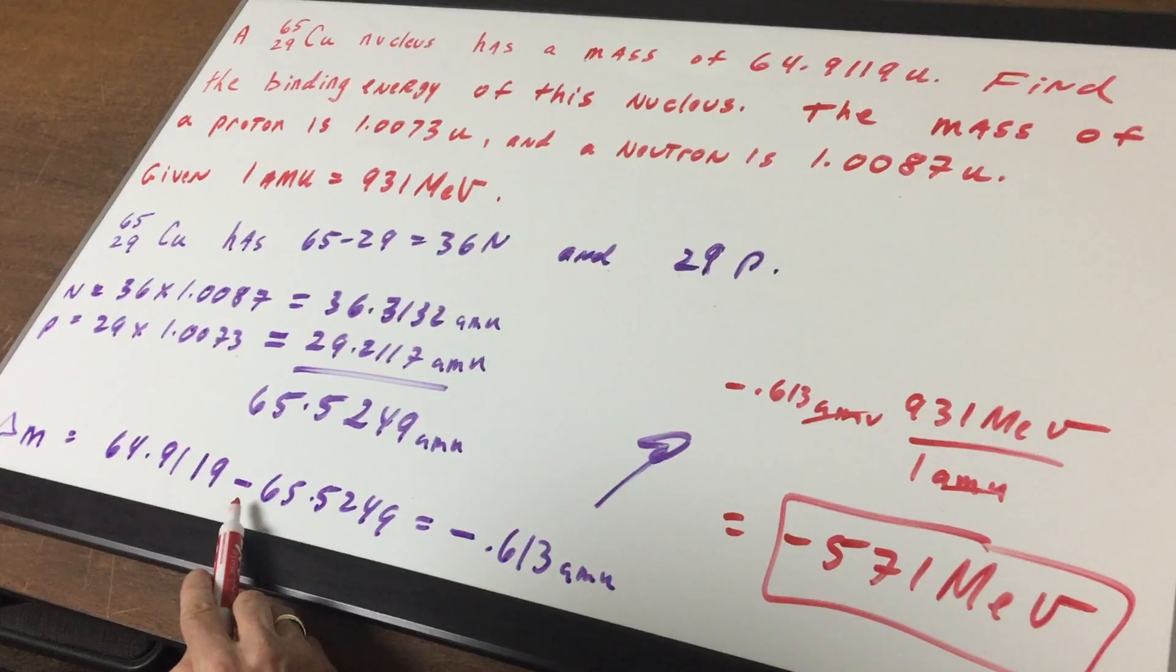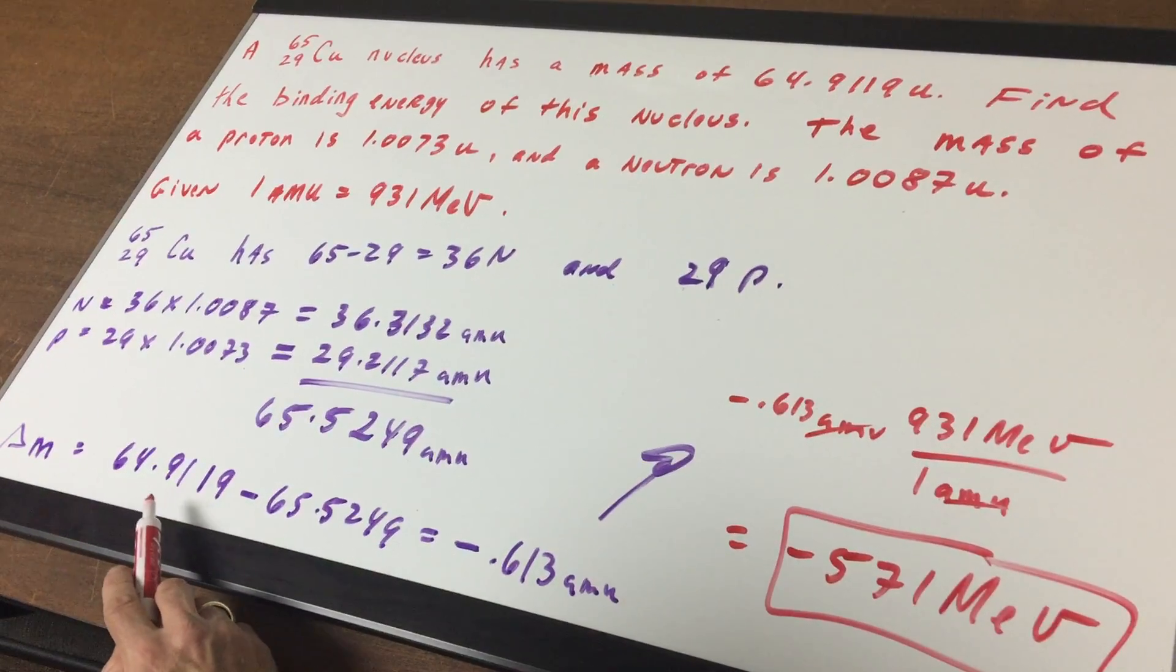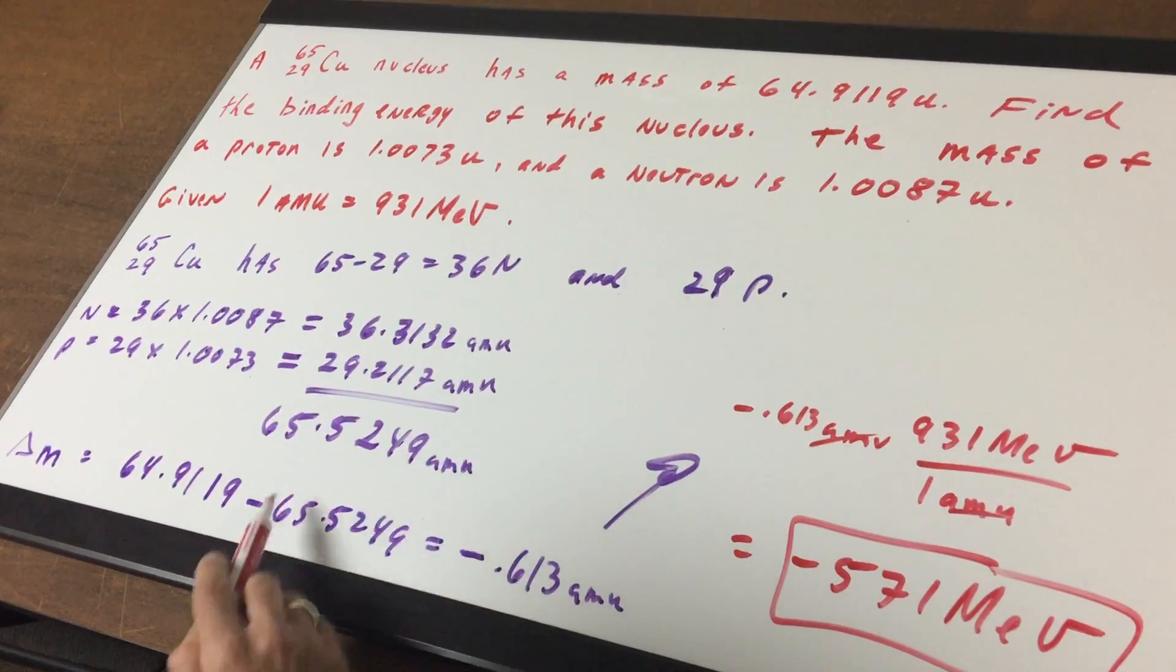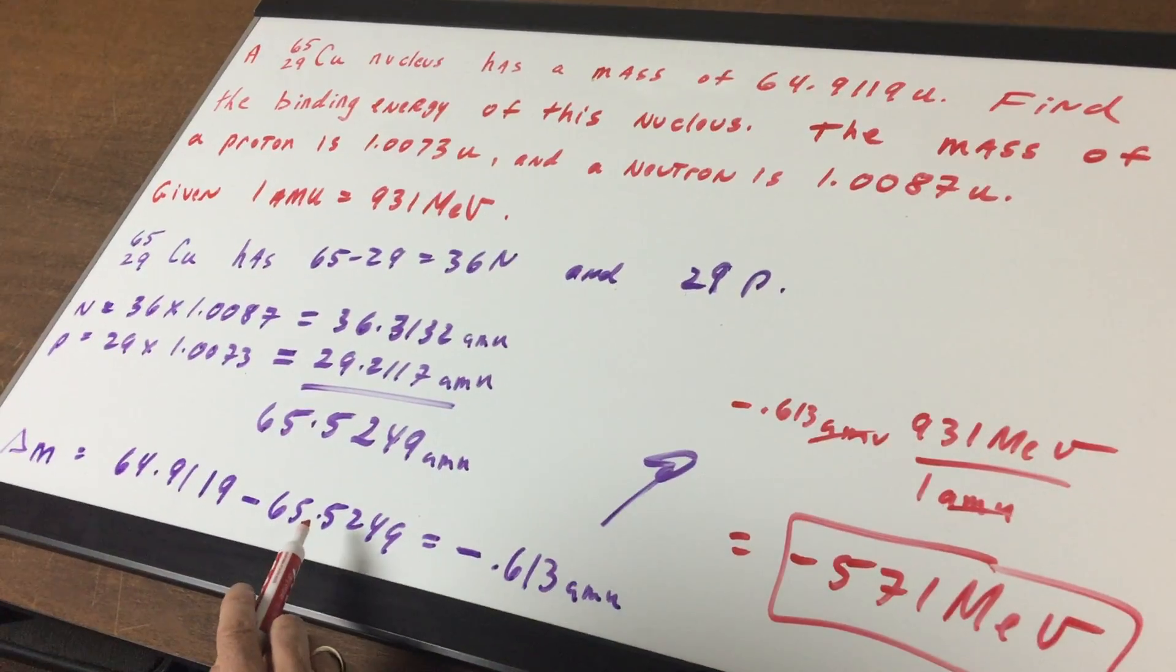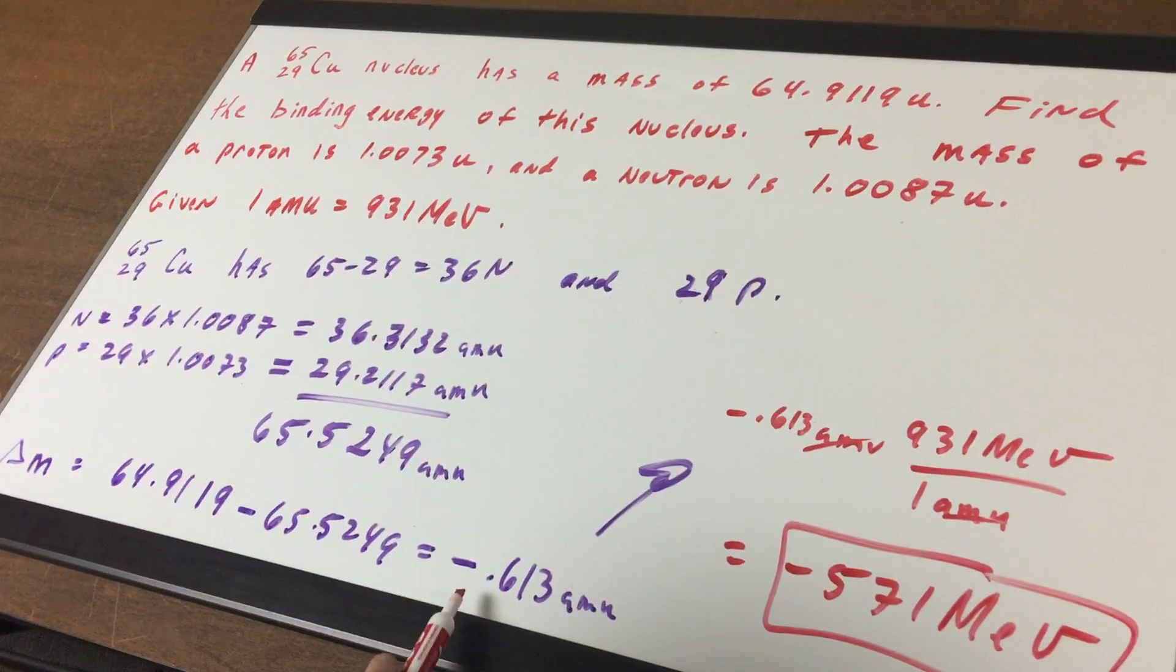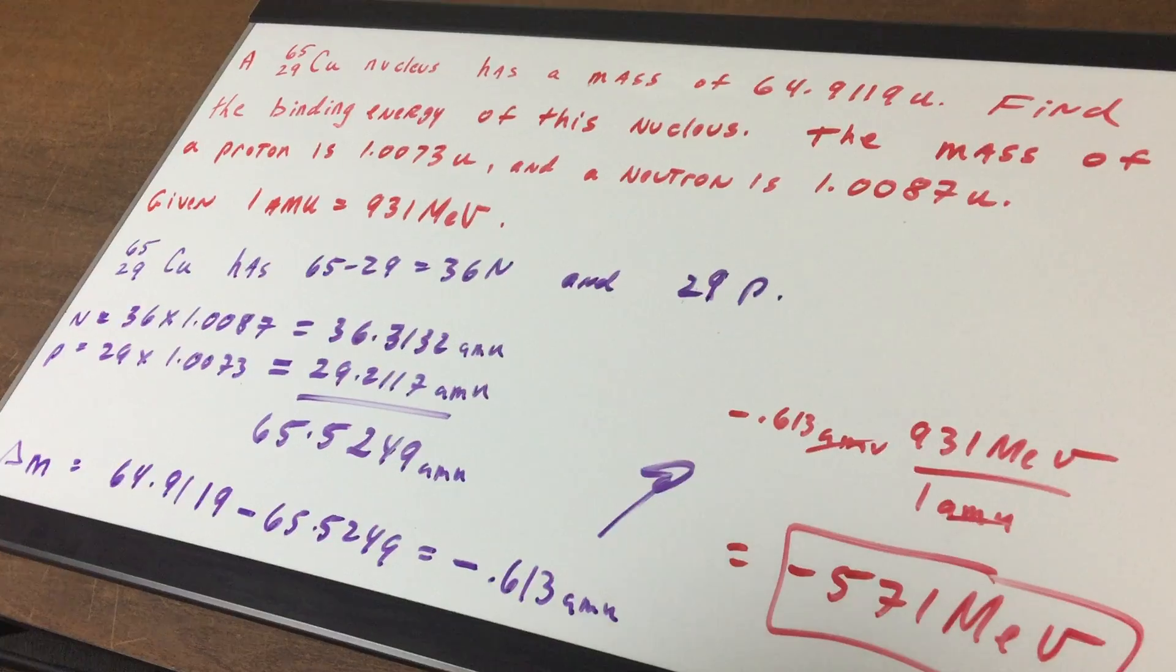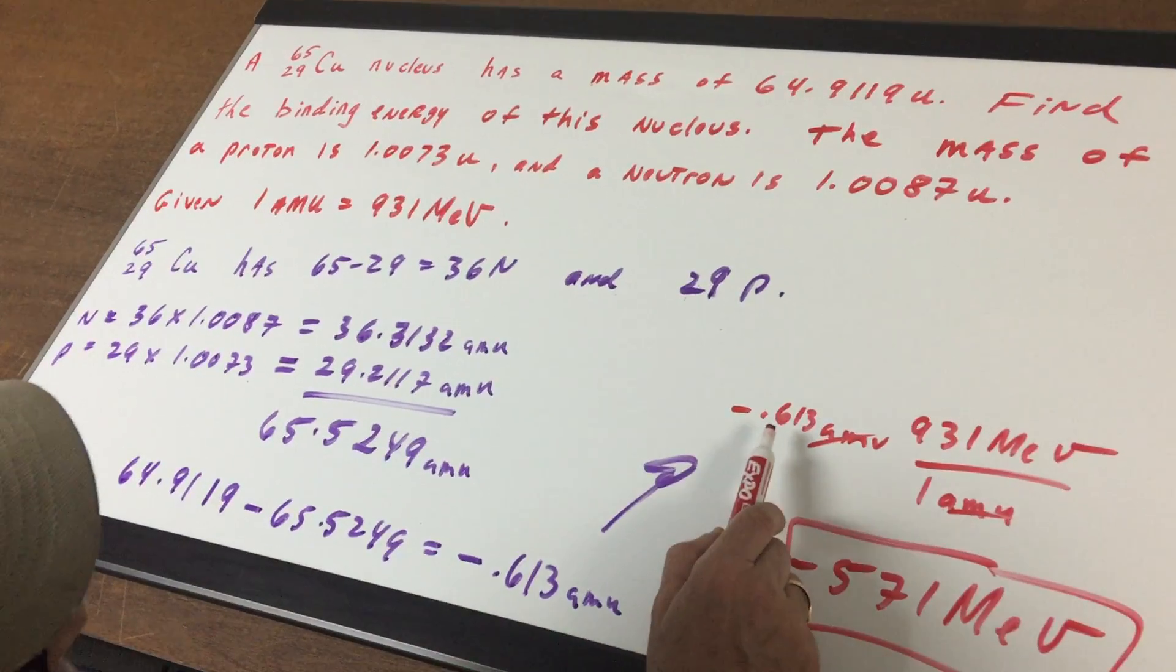Subtract 64.9119 minus the mass when we added up all protons and neutrons of 65.5249. We get a mass defect of negative 0.613 AMU.